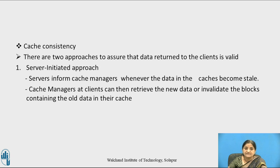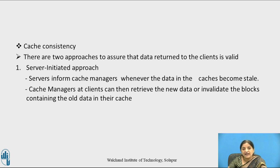Regarding cache consistency, multiple clients may cache data on their own machines and make modifications simultaneously, causing the cache to go into an inconsistent state. There are two approaches to ensure that data returned to clients is valid: the server-initiated approach and the client-initiated approach.